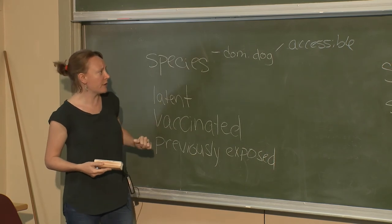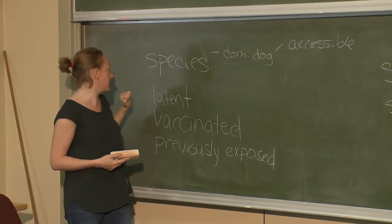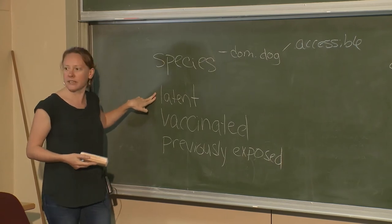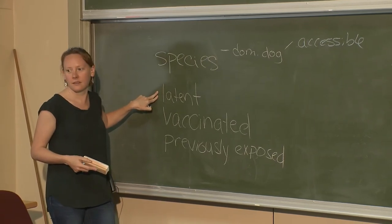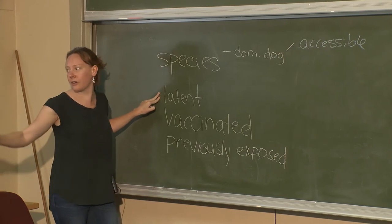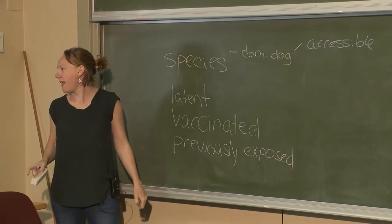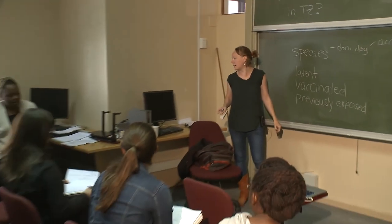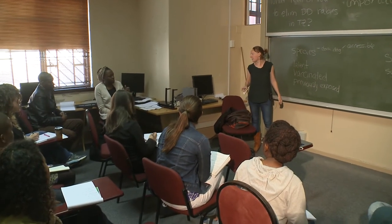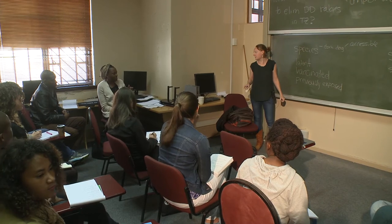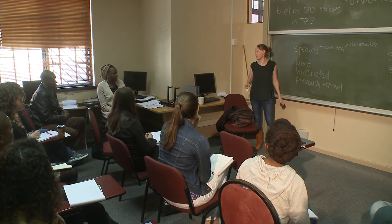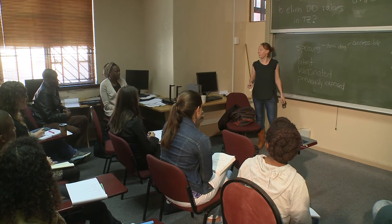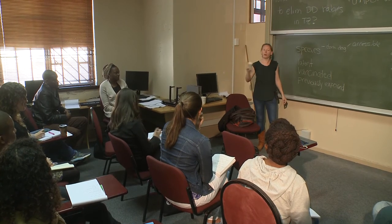We've got domestic dogs as our primary species. Our other categories now are: latent (exposed), susceptible, symptomatic/infectious, and vaccinated. Do we need to keep the latent compartment? The argument against: dogs transmit when symptomatic, so maybe just focus on susceptible and infectious. But the latent period can be around a month — and if vaccination campaigns happen annually, a month is fairly long relative to a year, so there's an argument for keeping it.